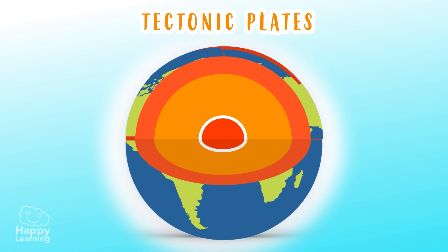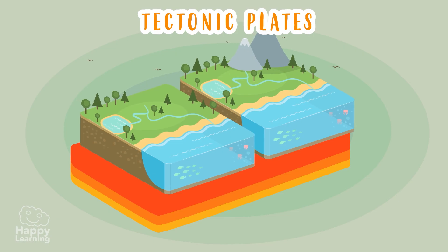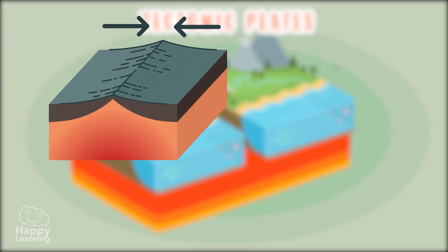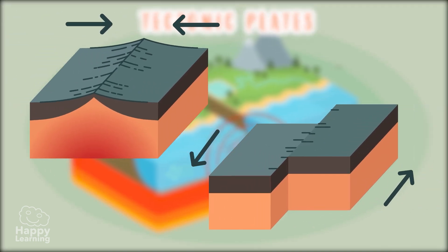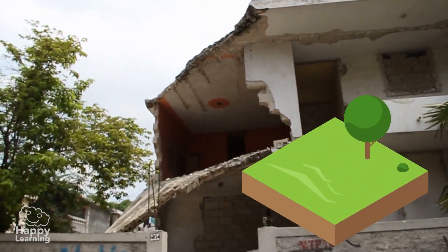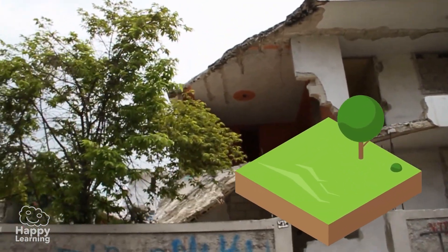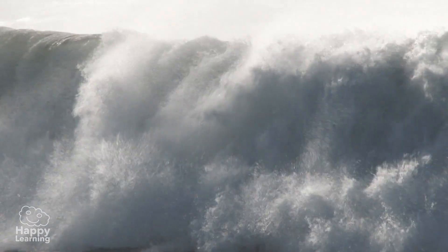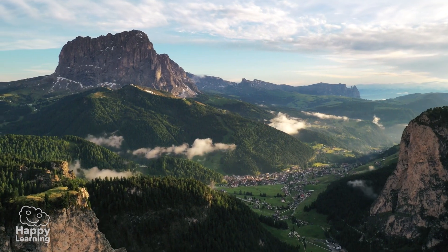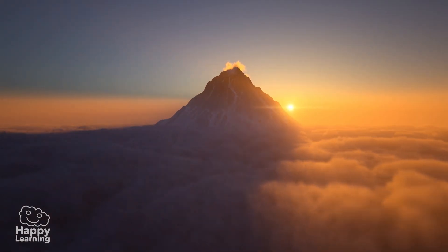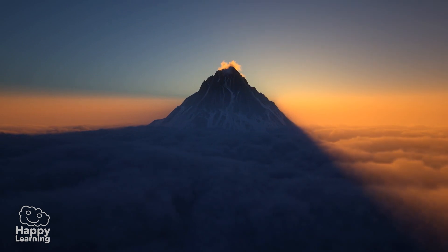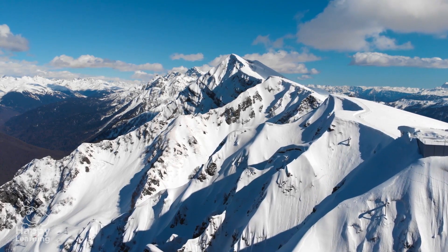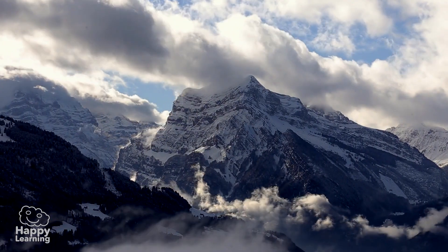Did you know that these plates move? Yes! They float on a semi-liquid surface and sometimes collide with each other or collapse. When this happens, it causes earthquakes, tsunamis, and even impressive mountains like these can appear. Of course, mountains don't form overnight — this happens very slowly and over thousands of years.